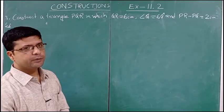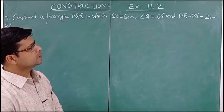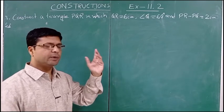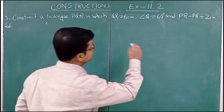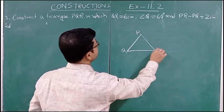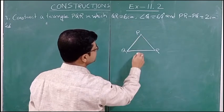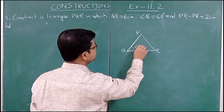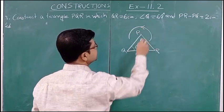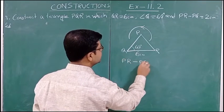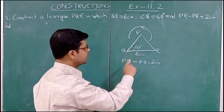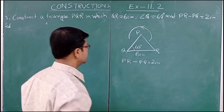In question number 2 we did a construction in which PQ minus PR was 2 centimeter — naming was different but similar type. Now let us see the rough diagram. Suppose this is the triangle: QR is 6 centimeter, angle Q is 60 degree, and here PR minus PQ is 2 centimeter. In question number 2 it was PQ minus PR; here it is PR minus PQ.